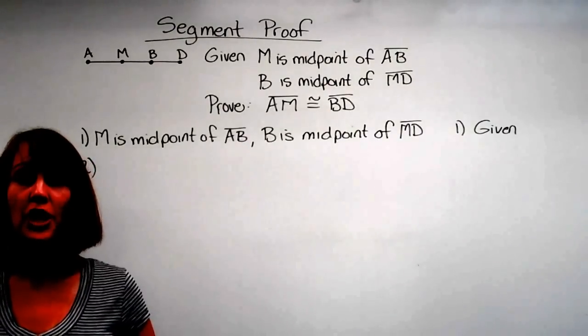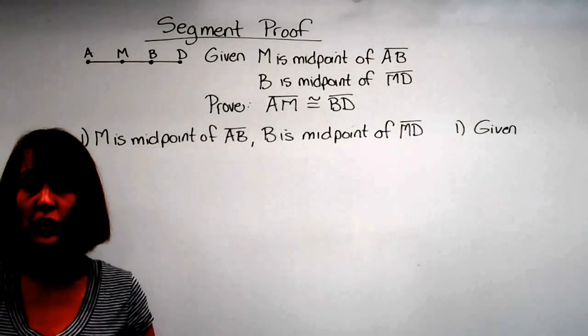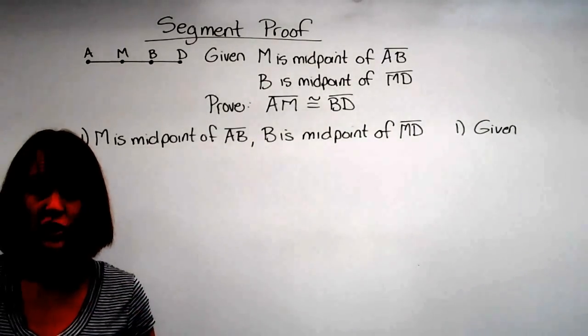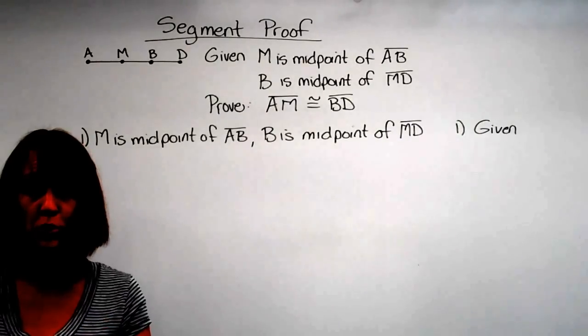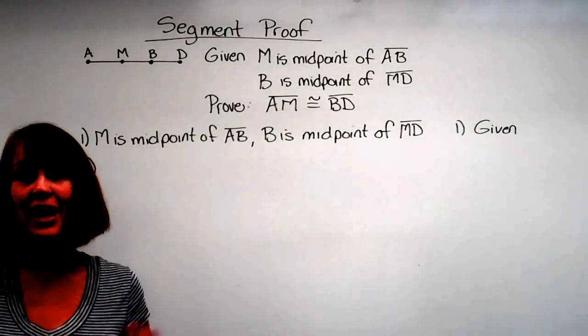Alright, let's take a look at a segment proof. So now we're going to move over from algebraic into geometric. Remember, they're going to give us a diagram. They're going to give us some information, and we're going to use that information to prove it. Really, we're just going to use our postulates, our definitions, and say how do we know this stuff?